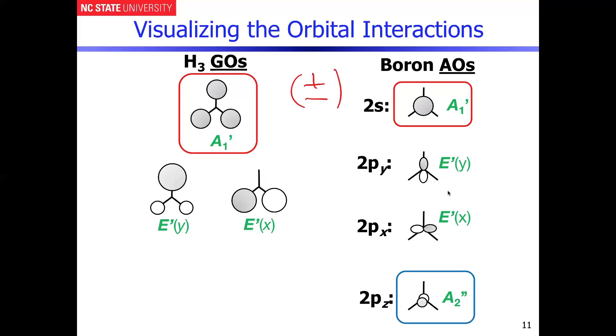The pz orbital in this particular character table has A2' symmetry, so that is going to give us a non-bonding interaction. And then we have symmetry matches between the two group orbitals with py and px. We have to effectively do the same thing—in each case we're going to do in-phase and out-of-phase combinations to make bonding and anti-bonding orbitals.